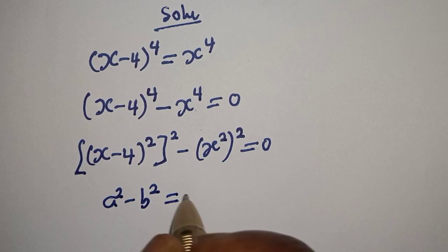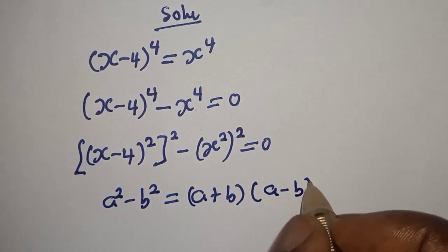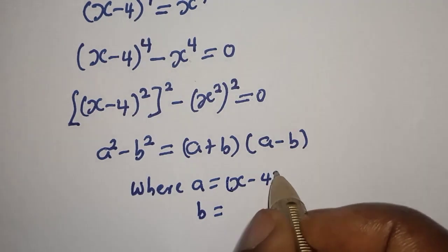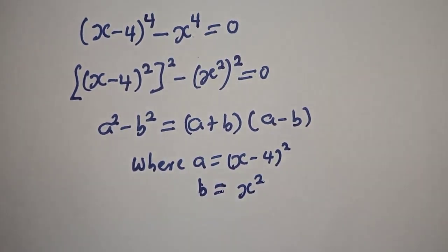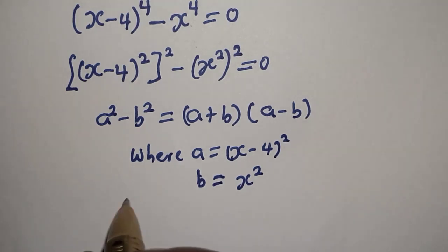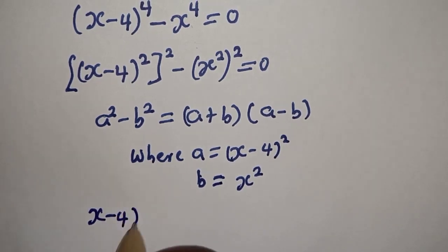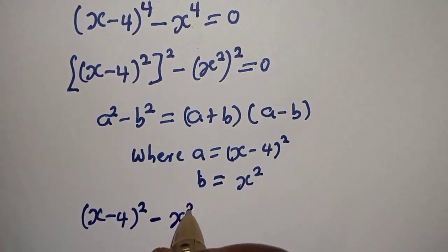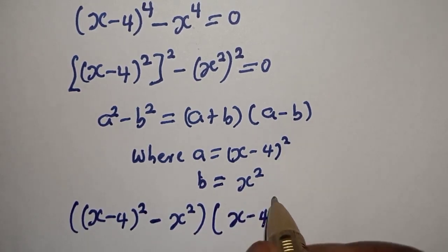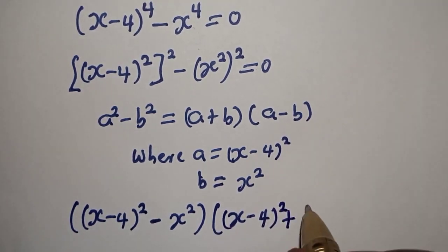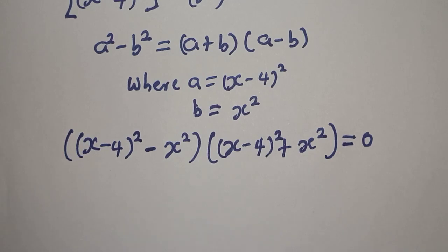This is in the form of a difference of squares: a squared minus b squared equals a plus b multiplied by a minus b, where a is equal to s minus 4 squared and b is equal to s squared. Substituting, we have s minus 4 squared minus s squared, multiplied by s minus 4 squared plus s squared, all equal to 0.